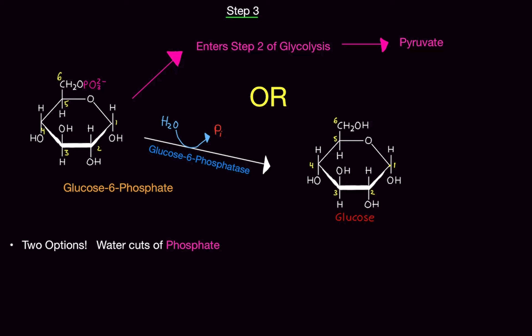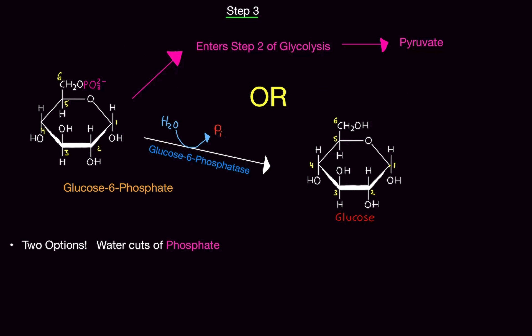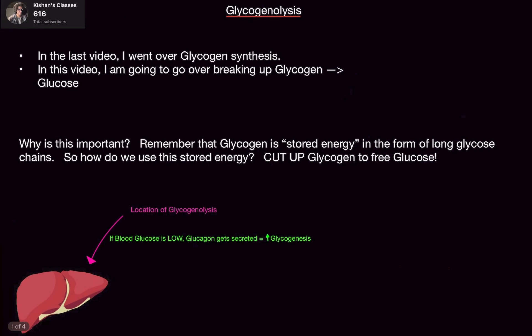So you have two options: if you go for the free glucose option, that glucose can be transported anywhere in the body to whatever cell needs it. Or you can go straight into glycolysis and fuel the cell you're already in. The water cuts off the phosphate using glucose-6-phosphatase, and that is it — pretty simple. Until next time!